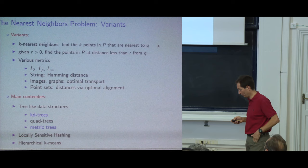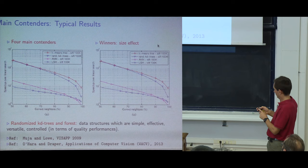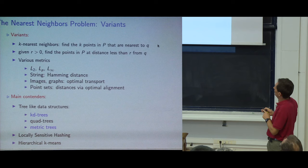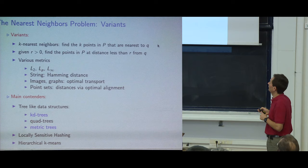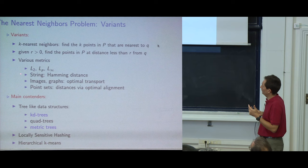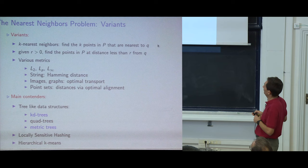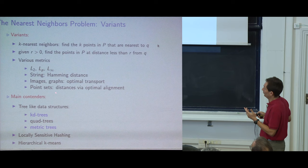Some variants to mention: you may be interested in k nearest neighbors, or range queries (finding all points within distance r of a query). Regarding metrics, beyond Euclidean distance you may care for the Hamming distance for strings, or define metrics for shapes, images, graphs, etc. I'll present one example: the earth mover distance. This is why the framework is of broad interest.